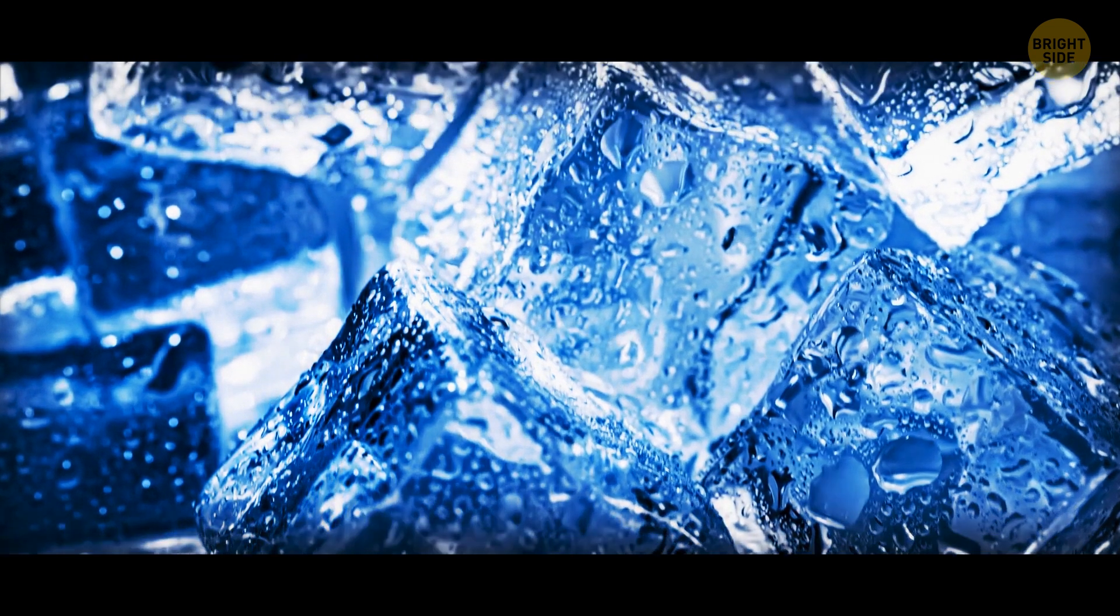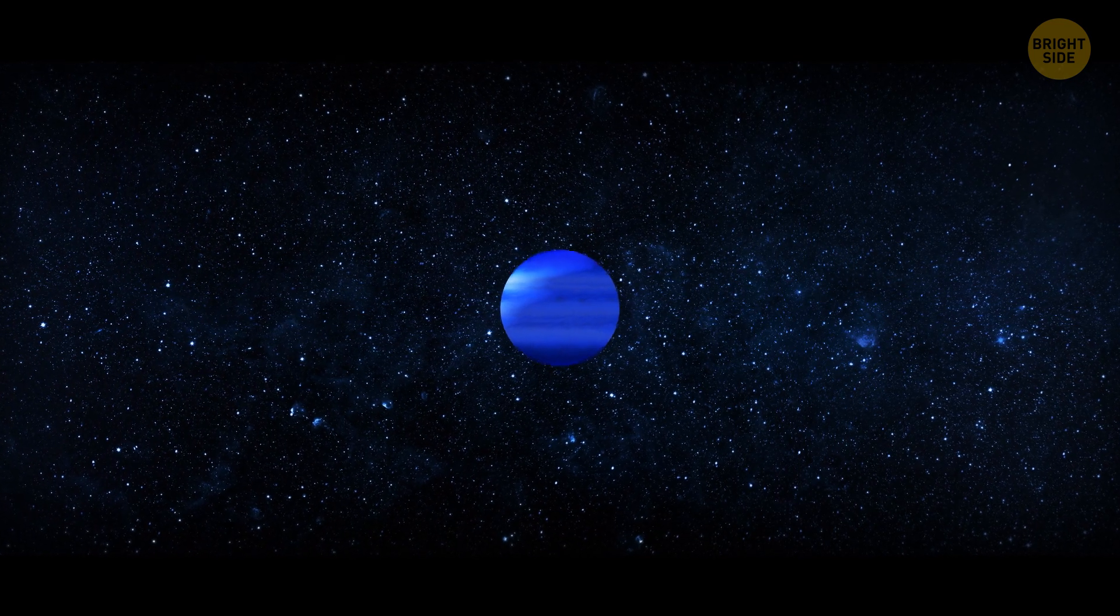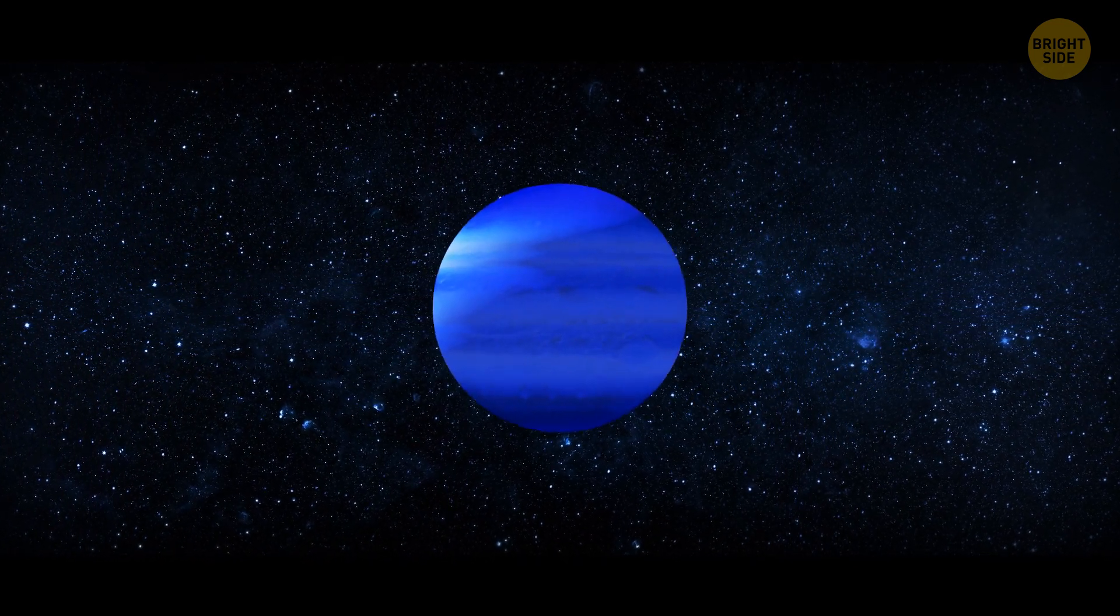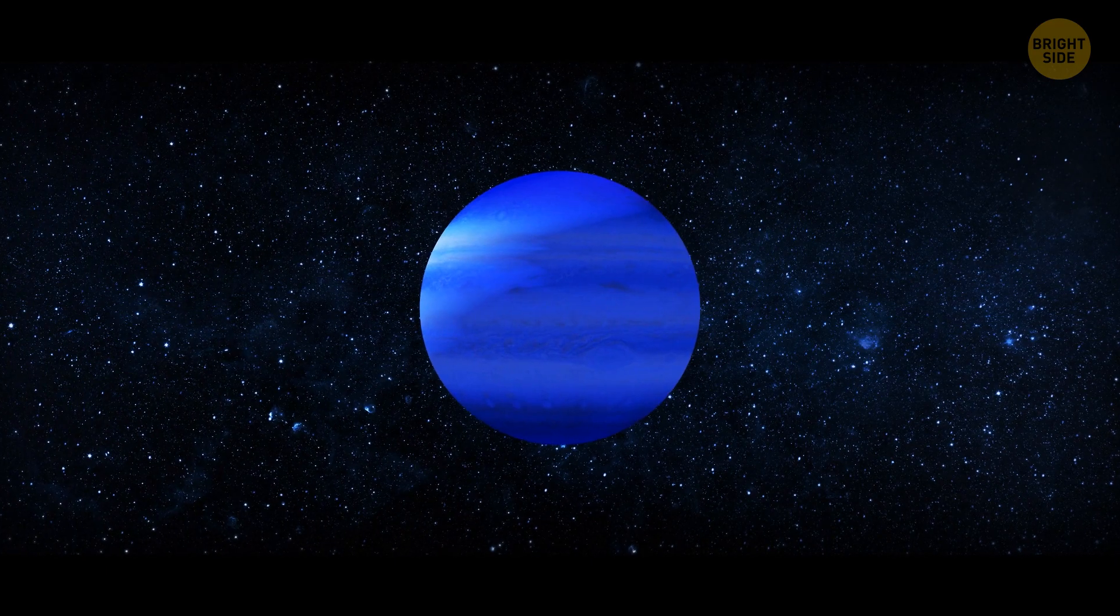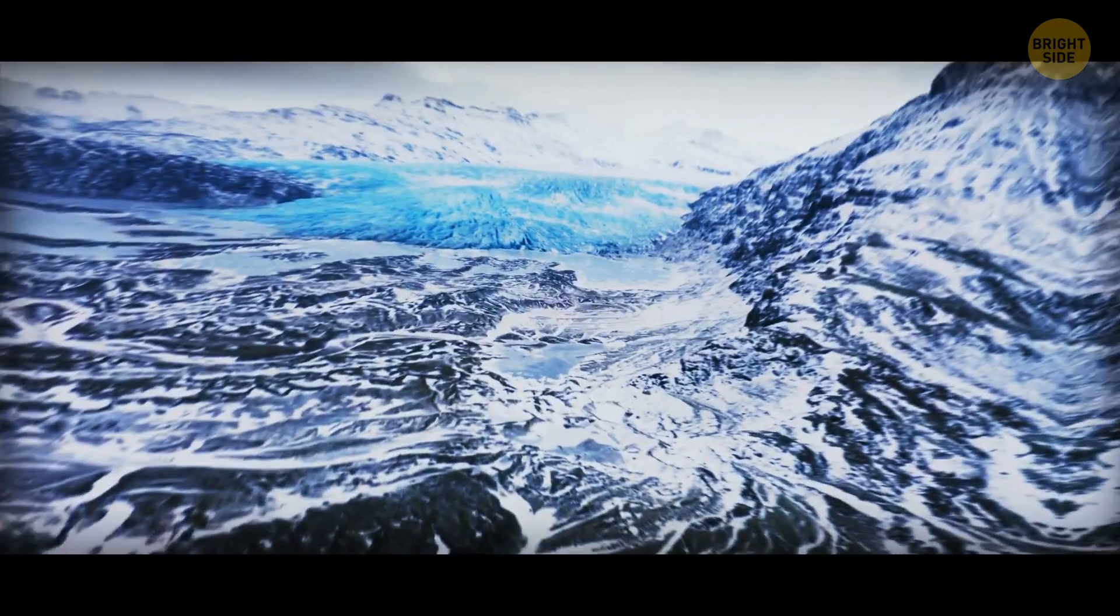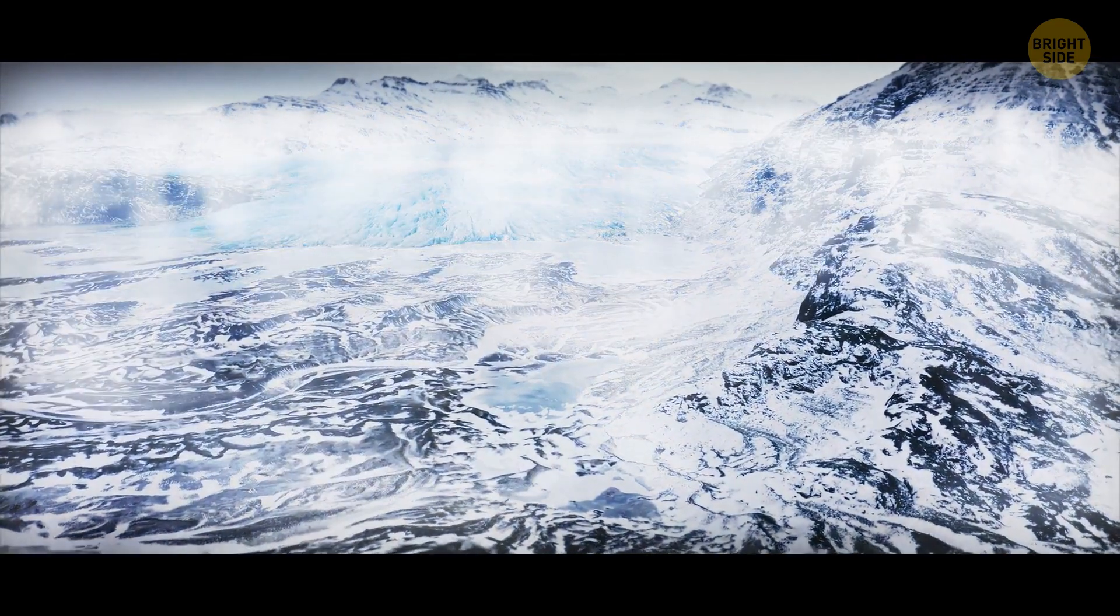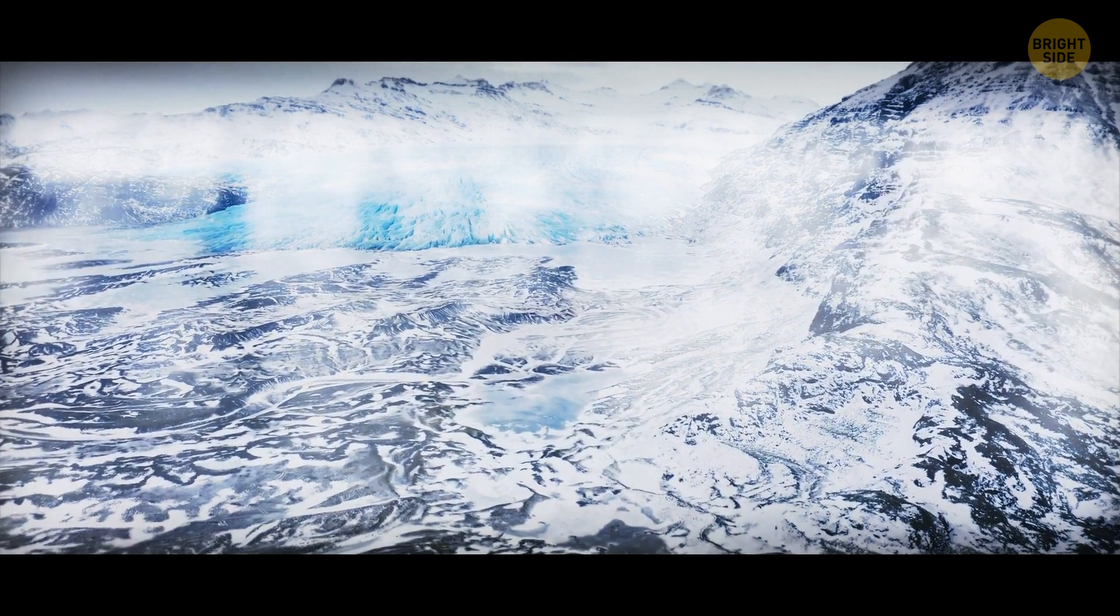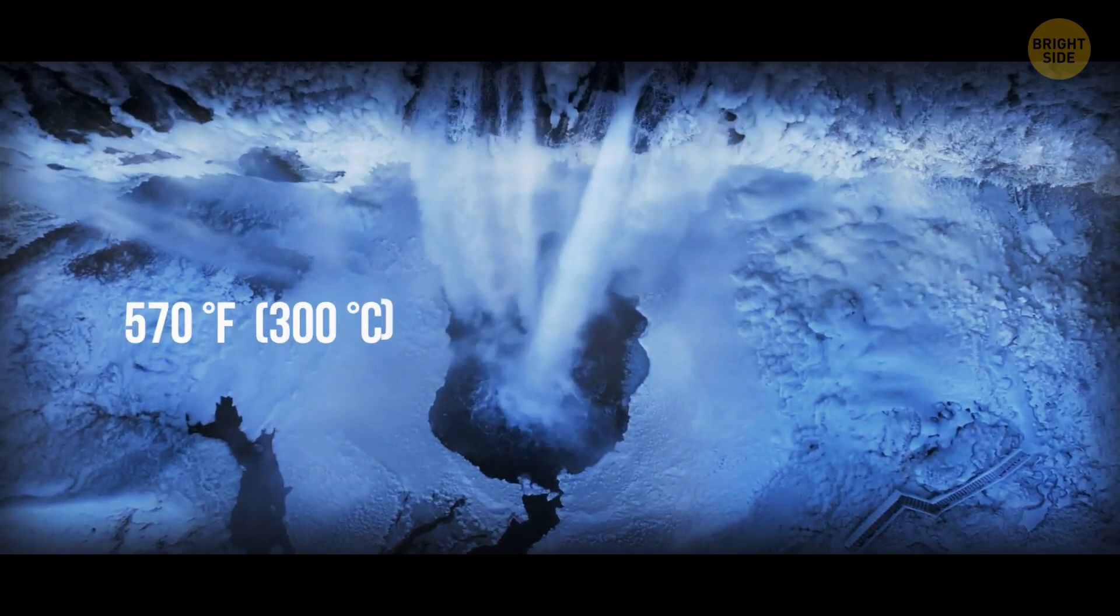Can you imagine hot ice? It exists just 33 light-years away from us, on one exoplanet. This planet consists of different water elements, and they form burning ice. The ice there is solid because of pressure, but the surface temperatures are extreme and go up to 570 degrees Fahrenheit.